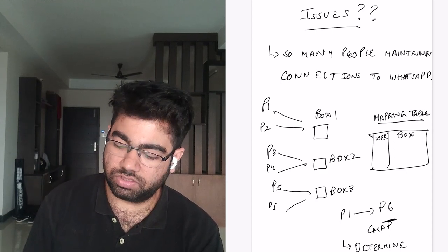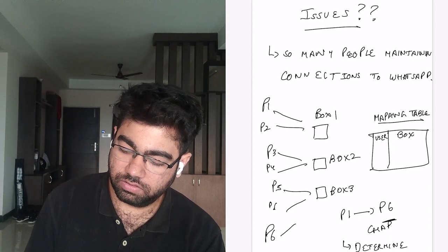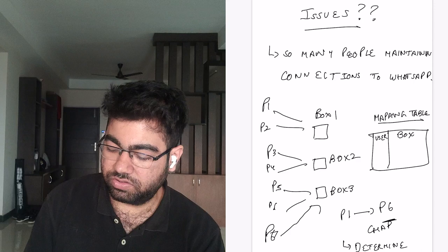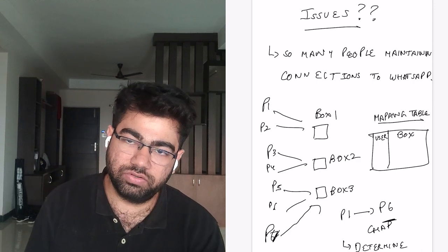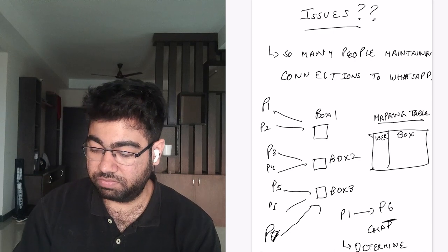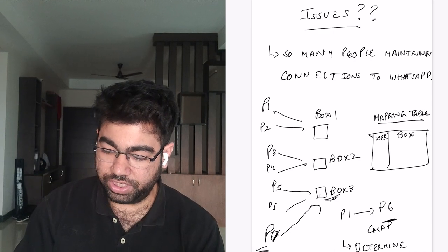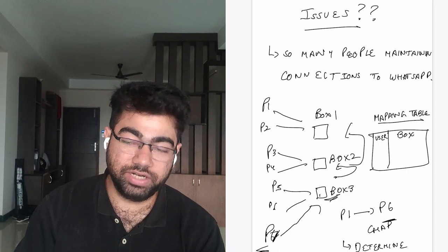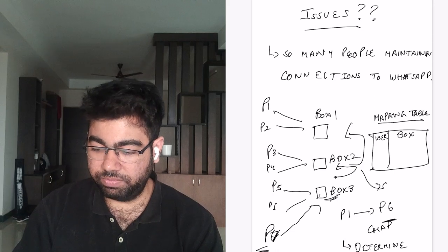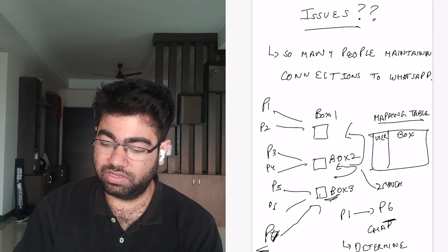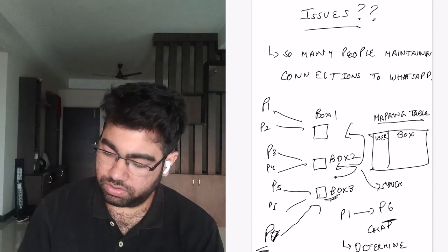This mapping table also has to be synchronized across multiple servers. It cannot just rely on a database because it needs to happen in real time and must be fast — so the table must be cached on each server. When a new user P7 joins Box 3, all other boxes need to know this. Box 3 must send updates to the other boxes, and this job is done by a synchronization service that keeps the mapping consistent across all server boxes.